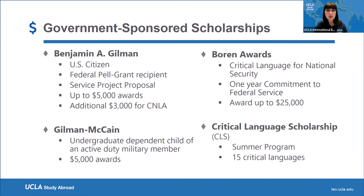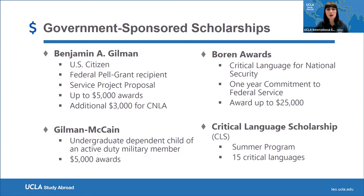If you decide to study a critical language for national security, you can apply for a complement called the CNLA. For example, if you got $4,000 for the Gilman, you can get another $3,000 through CNLA for studying a specific preferred language. Gilman-McCain is similar to the Gilman but is for the dependent child or spouse of an active duty military member, and that award is $5,000. Note that a green card does not count — you do need to be a U.S. citizen.